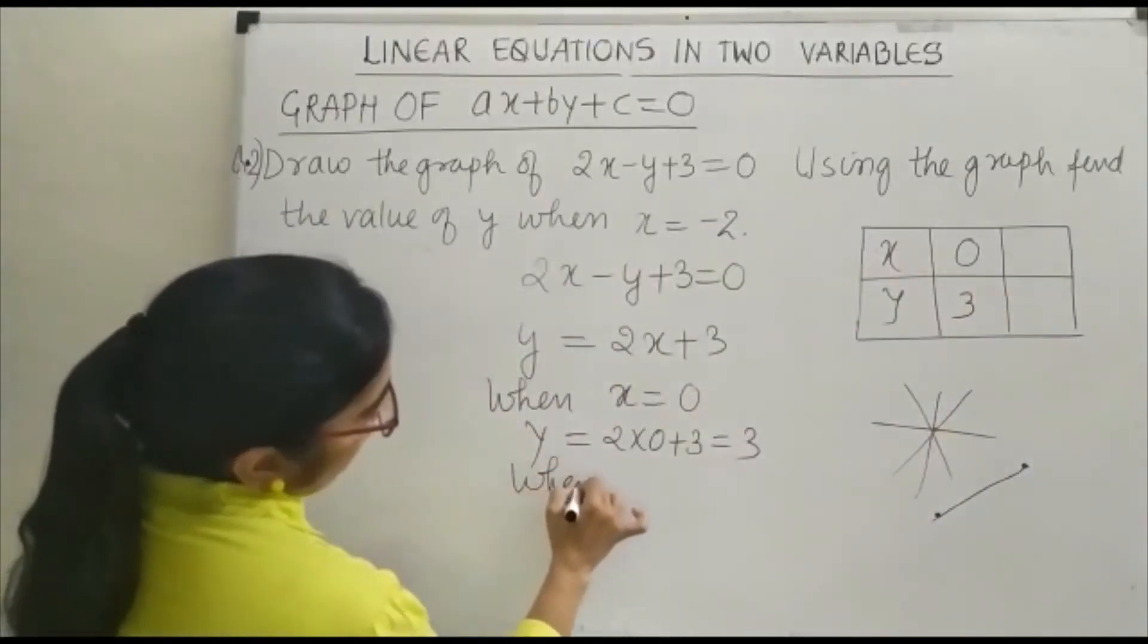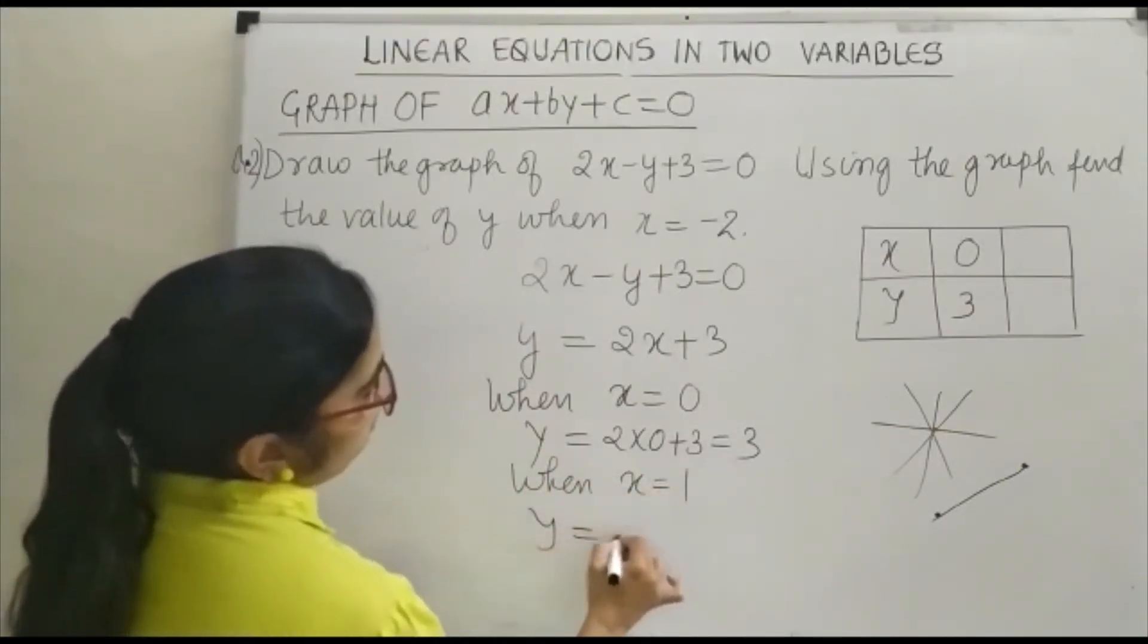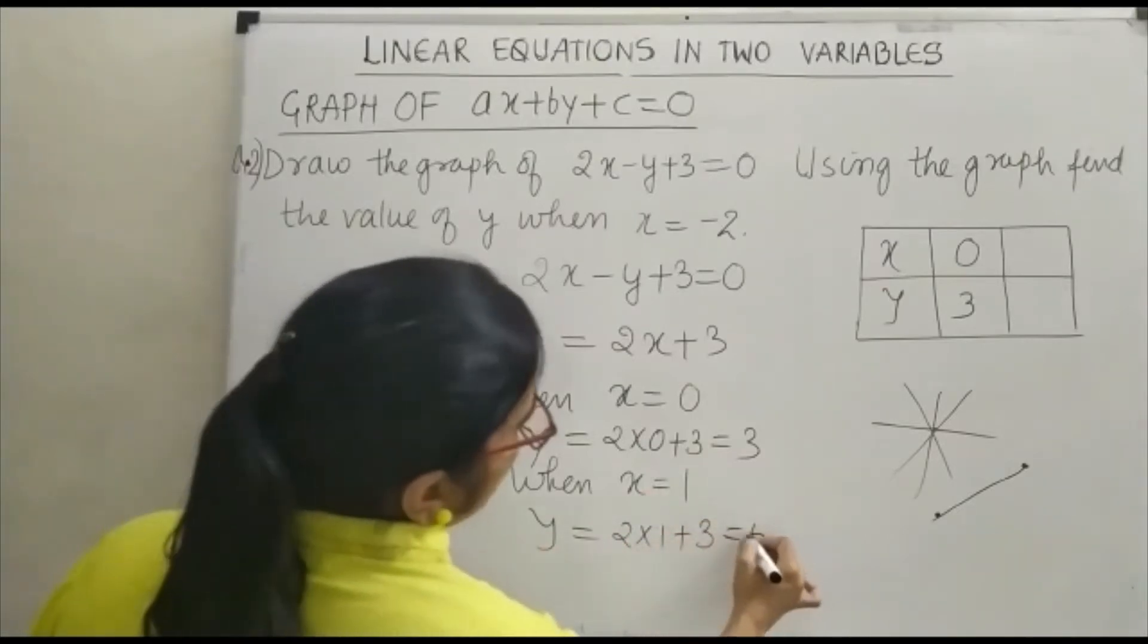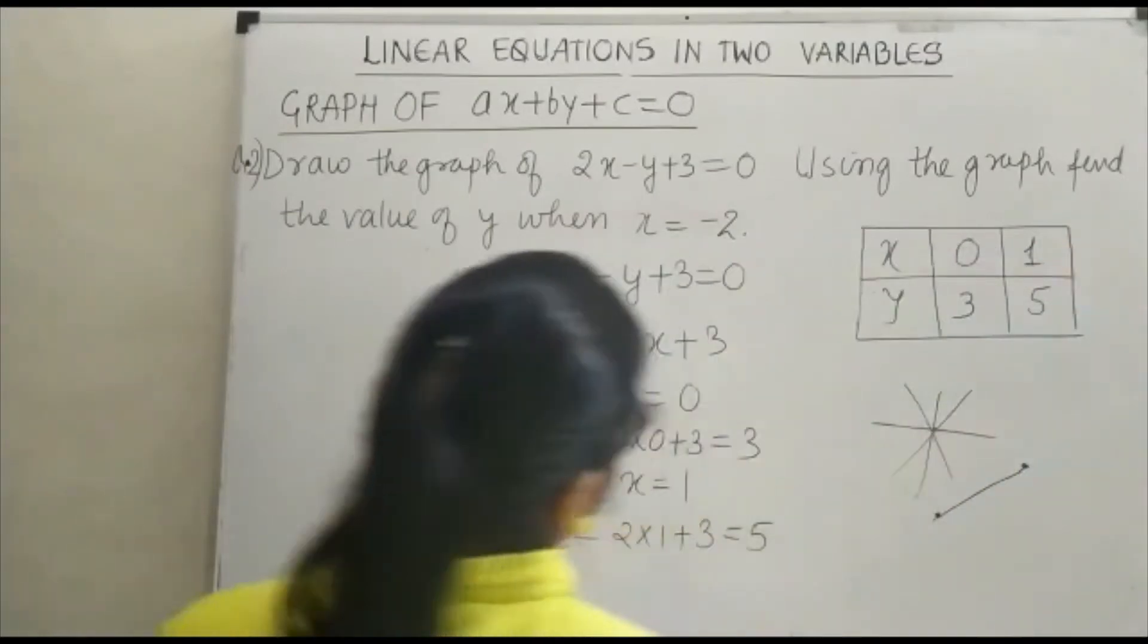When x is equal to 1, y is equal to 2 times 1 plus 3 and that is equal to 5.